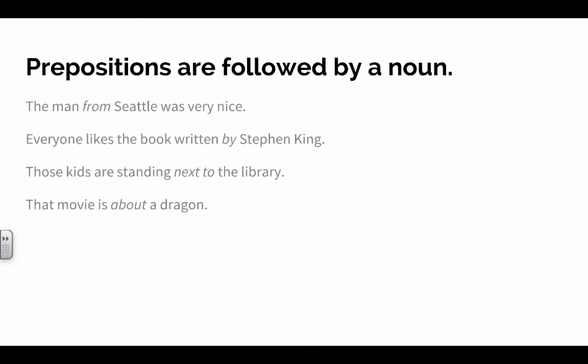Okay, basically, prepositions are followed by a noun. They couldn't connect two things unless they were actually followed by something. So we see, say here, the man from Seattle was very nice. Seattle is the object of the preposition. Everybody likes a book written by Stephen King. Stephen King is the object of the preposition by.